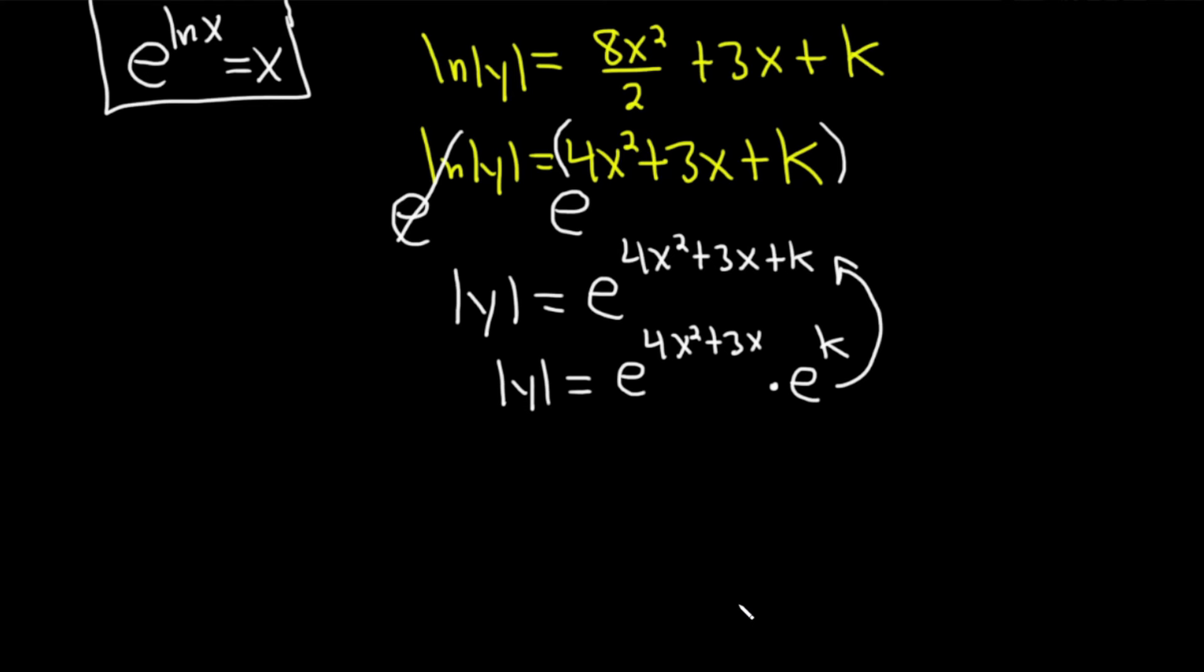I'm going to go ahead and drop the absolute value now. Whenever you drop an absolute value and you have an equation, you put a plus or minus. I'm going to put the e to the k in the front. And then here we have e to the 4x squared plus 3x.